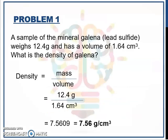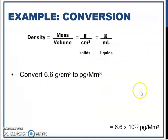So we'll do an exercise. A sample of the mineral galena weighs 12.4g and has a volume of 1.64 cm³. What is the density of galena? So density equals mass over volume. Mass is 12.4 gram divided by the volume 1.64 cm³. So you will get 7.56 gram per centimeter cube. Here's another example you can try.